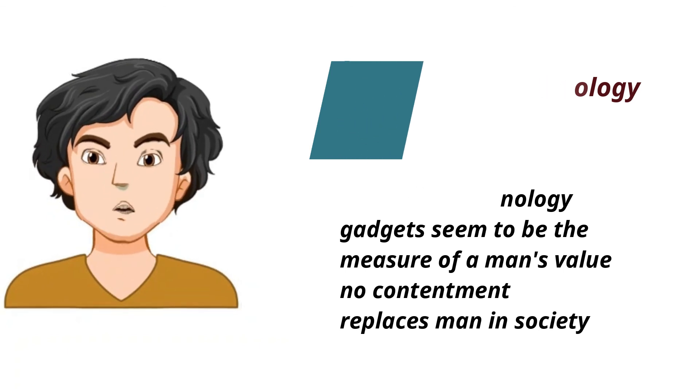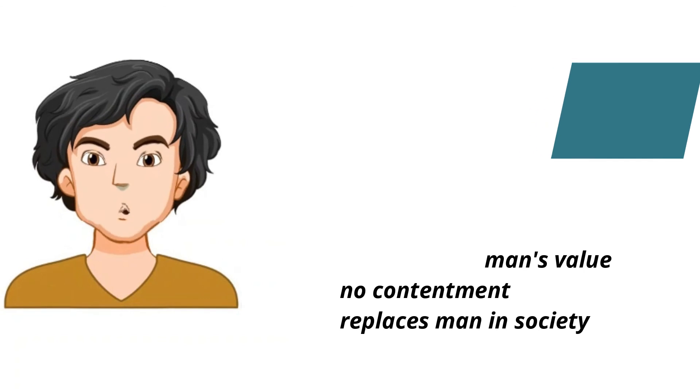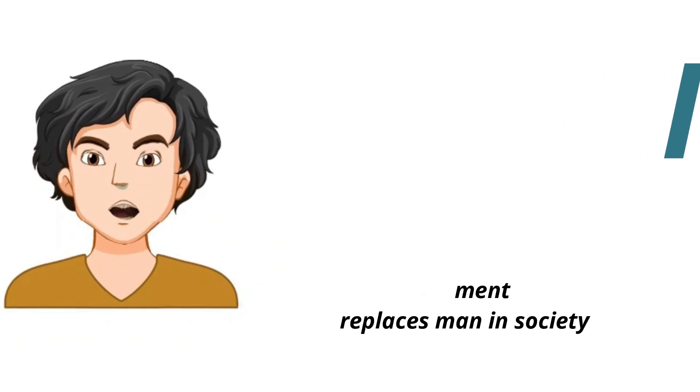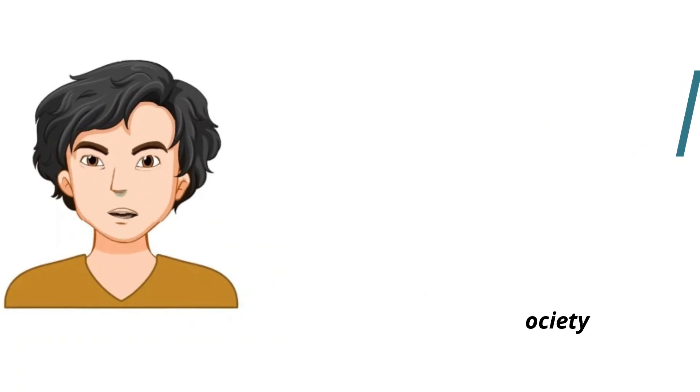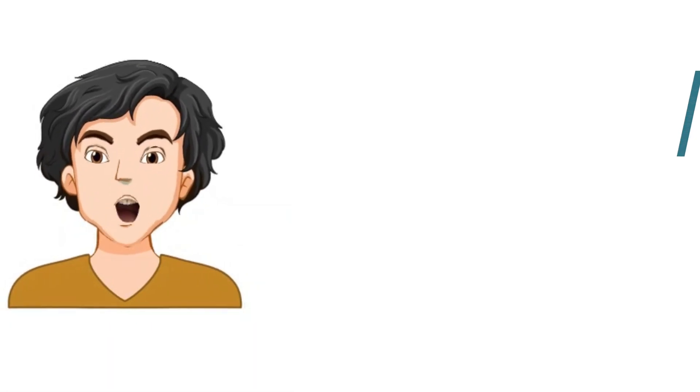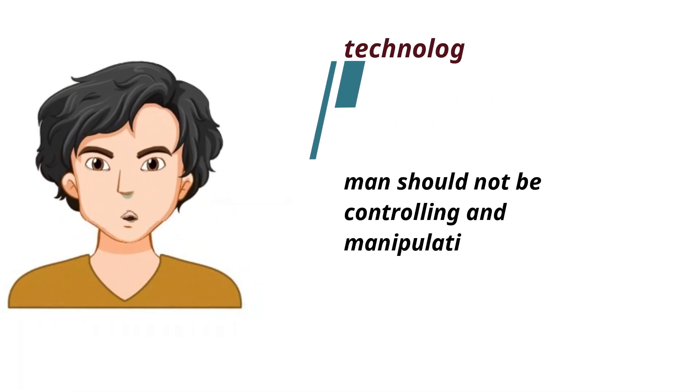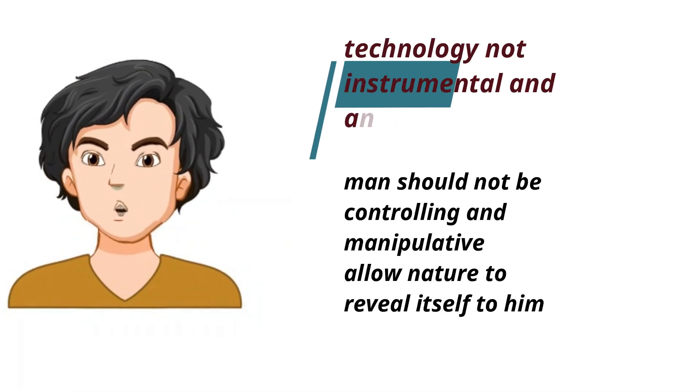These new products also tend to replace man in the society, as the demand for manual labor is becoming less and less because of the availability of machineries. A balance has to be struck between technology being instrumental, a means to an end, and anthropological, a human activity.